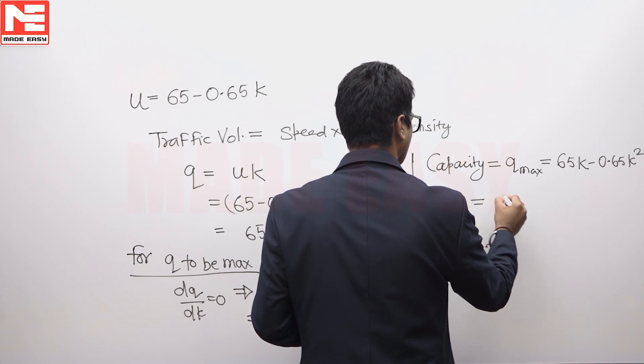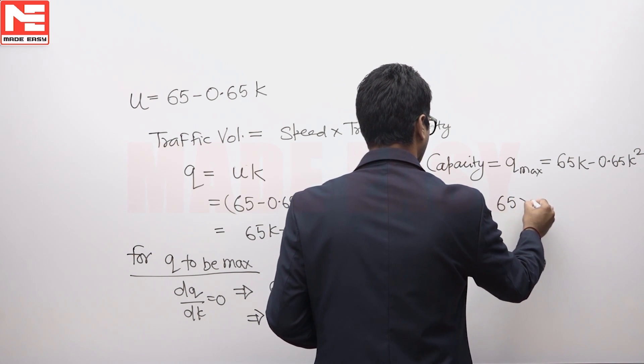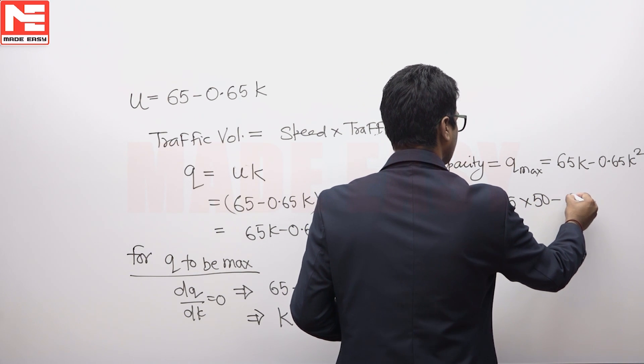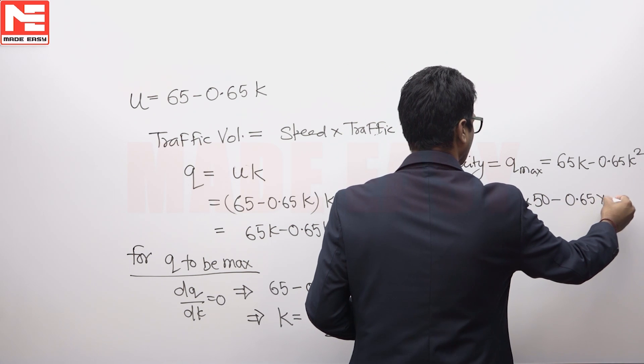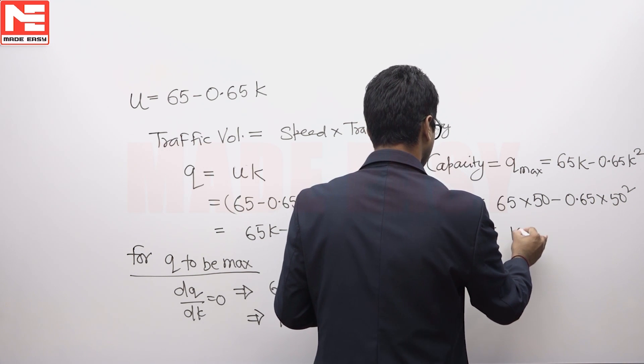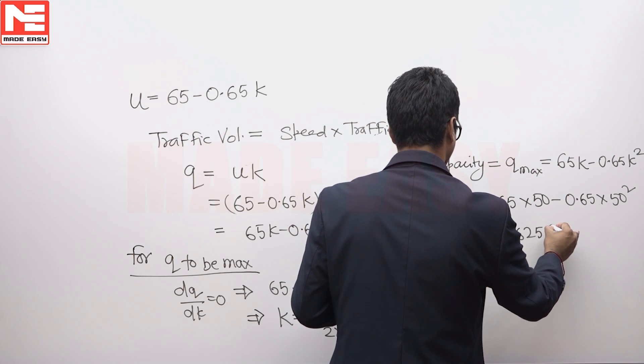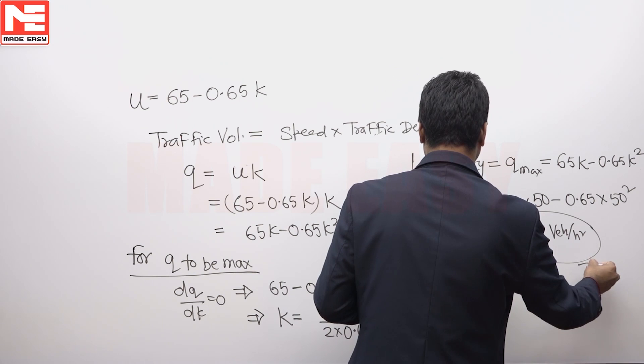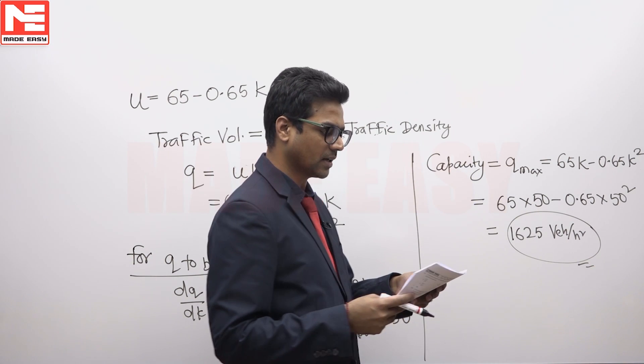We can write this as equal to 65 into value of k is 50 minus 0.65 into 50 squared, and this equals 1625 vehicles per hour. And hence, correct answer is C.